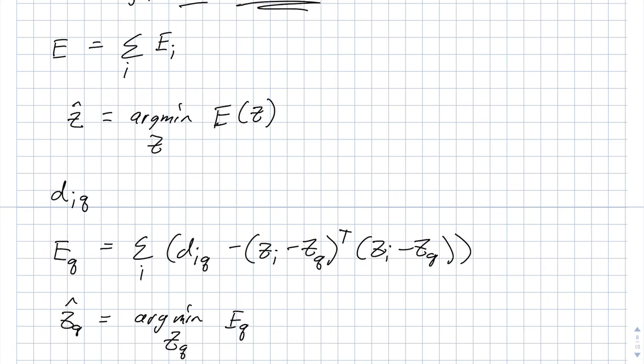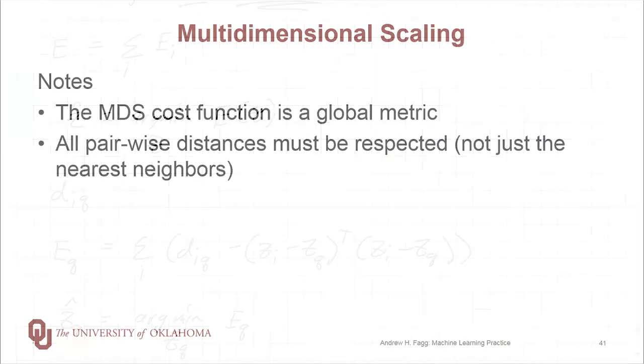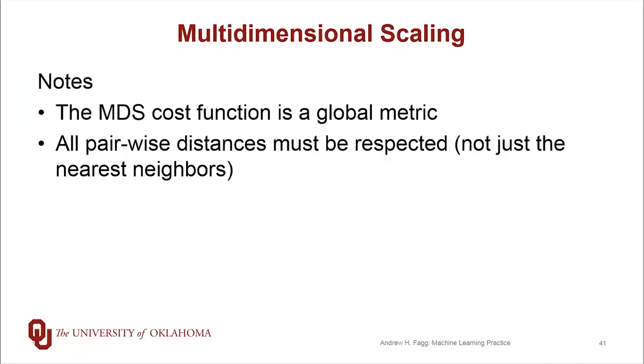All right, so that gives you a sense of what the training process looks like in MDS. And it also gives you a sense of what the query process looks like. So a couple of notes about multidimensional scaling. The cost function is actually a global metric. And what I mean by this is that we are respecting all of the pairwise distances between the samples in our data set. This is in contrast to locally linear embedding where, in essence, the distances to the neighborhood mattered, but the distances to all other points were not taken into account. So we were able to handle local constraints, but we don't actually handle global constraints.